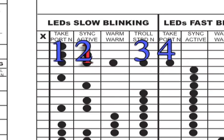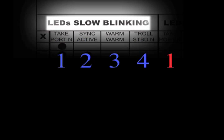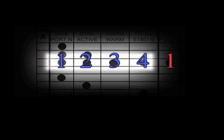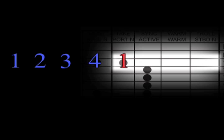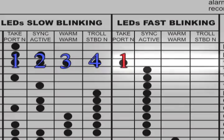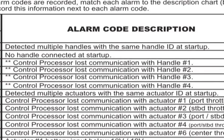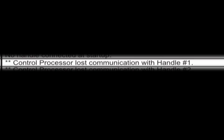In the example at hand, we see that we have the number 1 light blinking fast, followed by lights number 1, 2, 3, and 4 blinking slowly. In reviewing our chart, we see that this corresponds to the alarm indicating that the control processor lost communication with handle number 1. If this were an actual alarm, this would tell us that the most recent alarm indicated a station communications problem between the control head and the control processor.